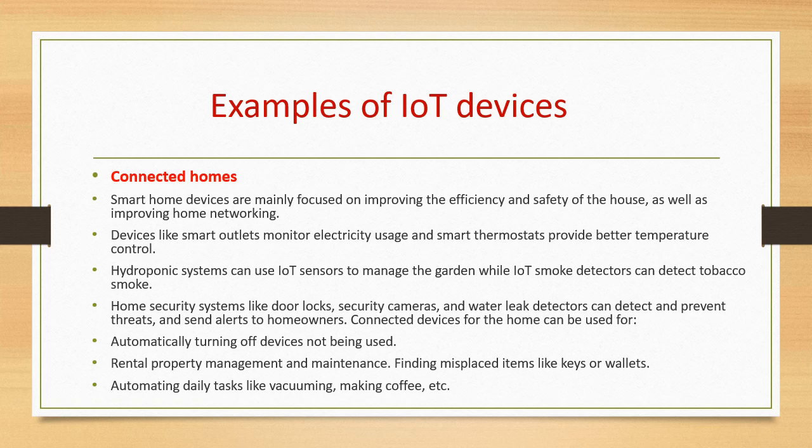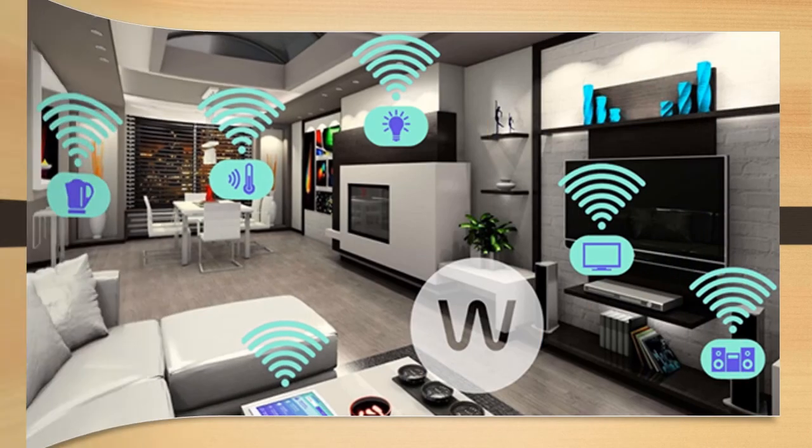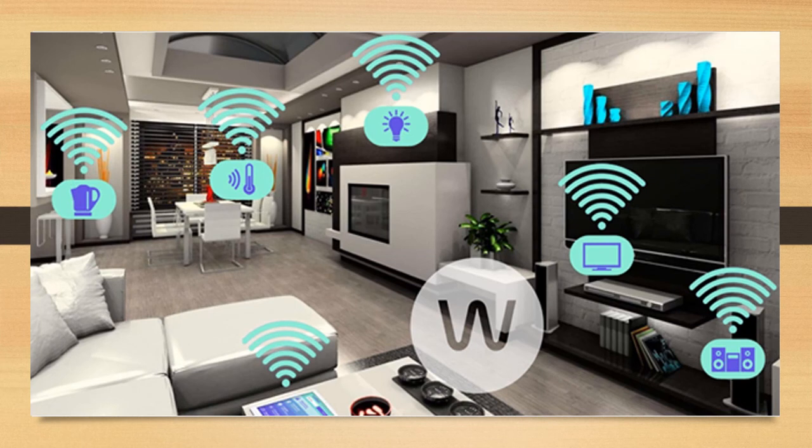This is what a smart home looks like. In the picture we can see an infotainment system, a television connected to the internet, and smart electricity bulbs with sensors that detect if anyone is present in the house — lights switch on only when someone is home, and switch off otherwise. There is also a temperature monitoring system: if the outside temperature is very low, the heating system switches on automatically, and if the temperature becomes high, it switches to the cooling system.